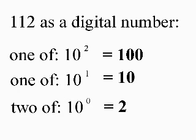The figures in digital numbers tell us how many of the power 10 numbers we have. Digital 112 for example tells us that we have 1 times 10 to the power 2 which is 100, 1 times 10 to the power 1 which is 10, and 2 times 10 to the power 0 which is 2.